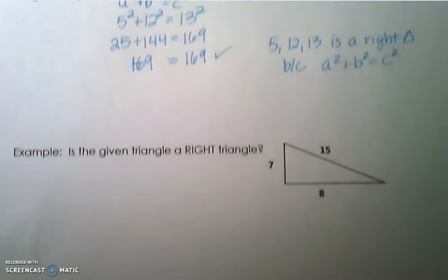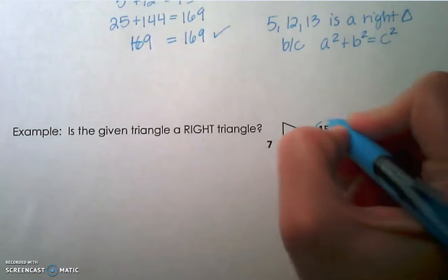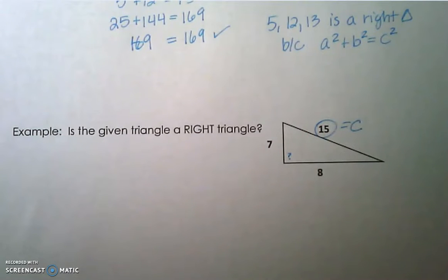Okay, let's take a look at a given triangle. Is this a right triangle? Notice that the angle is not marked 90 degrees, so we can't assume that it's a right triangle. Let's plug these numbers into Pythagorean theorem, keeping in mind that 15 is the largest number, so it has to go in for c.